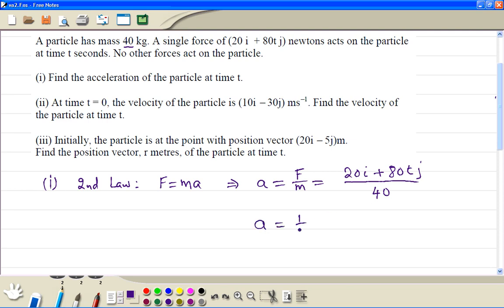We get half i plus 2tj meters per second squared.